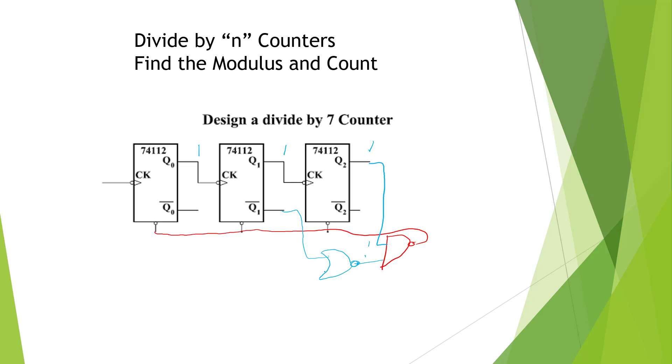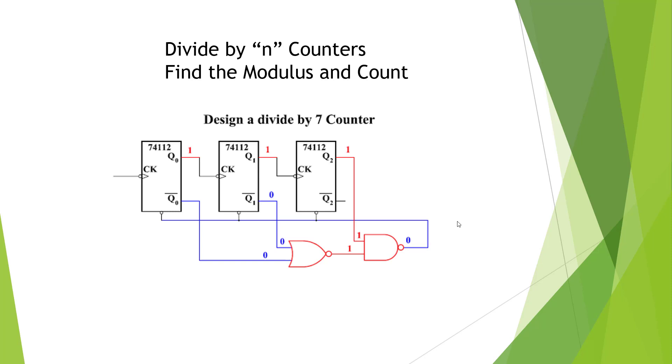an OR like this. And that should be good. We have our divide by 7 counter. And we have a NAND and a NOR going through the zeros, just like we have on our diagram. So we did good.